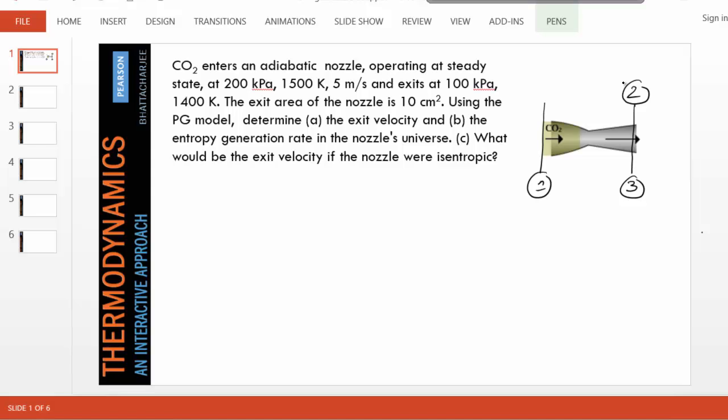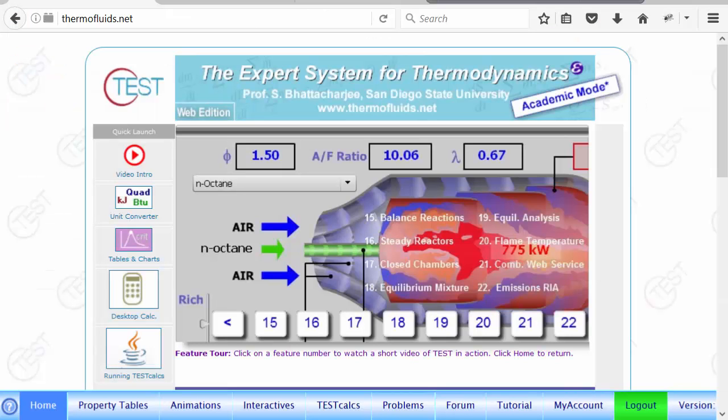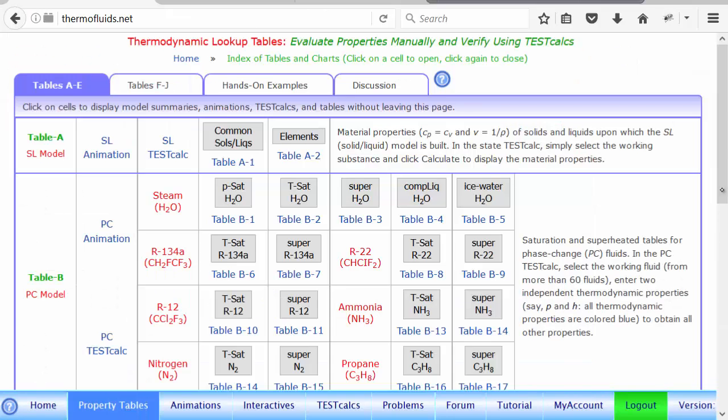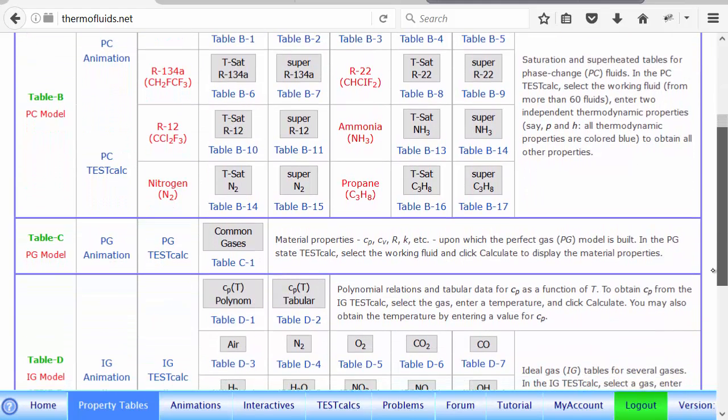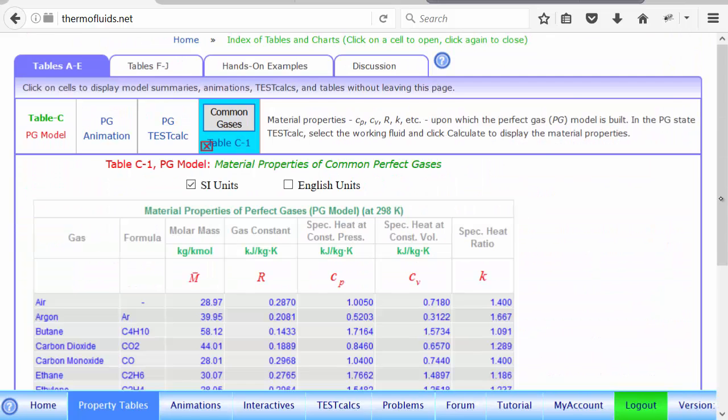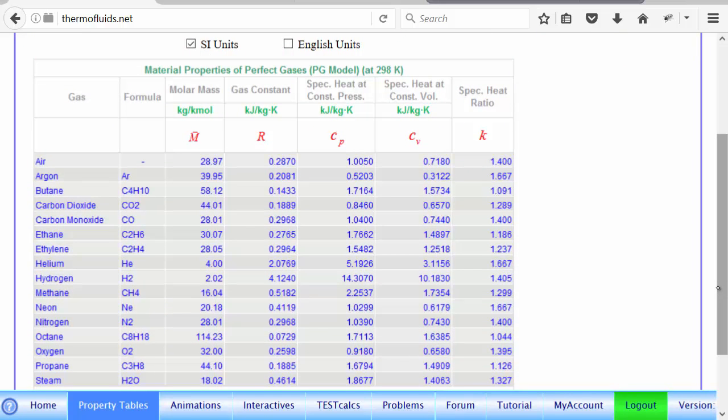First, some material properties. We'll need probably, if you use the PG model, we'll need for carbon dioxide the values of Cp, R, etc. So let's collect those numbers. We go to property tables, PG model, common gases.